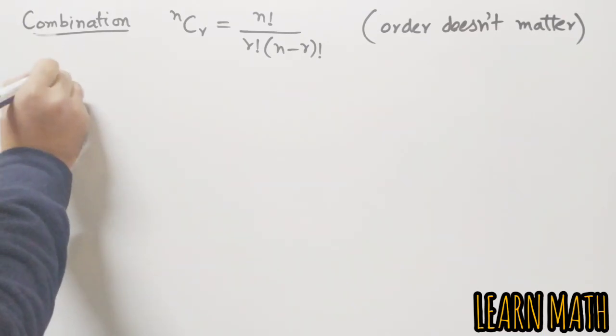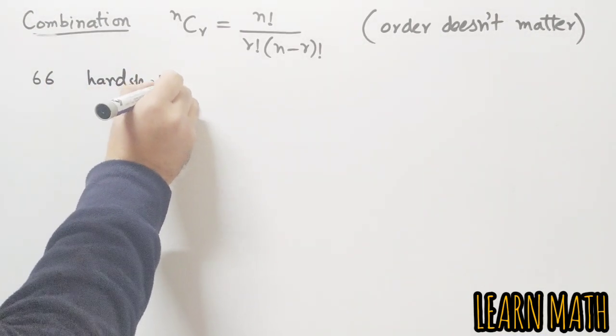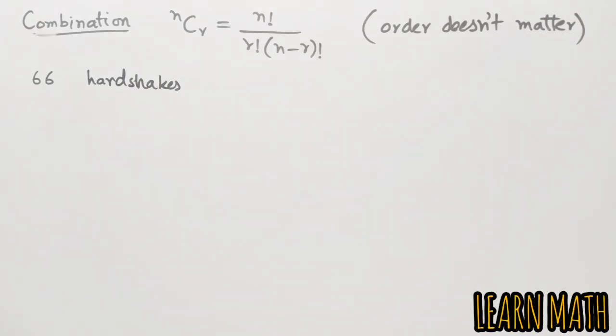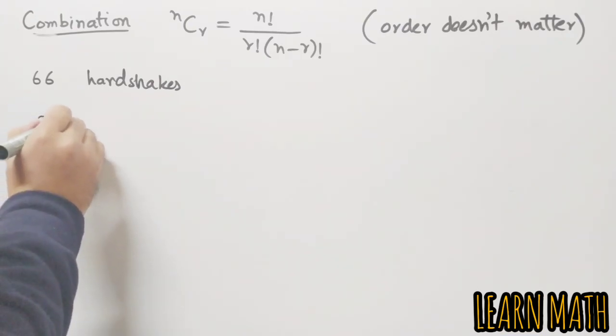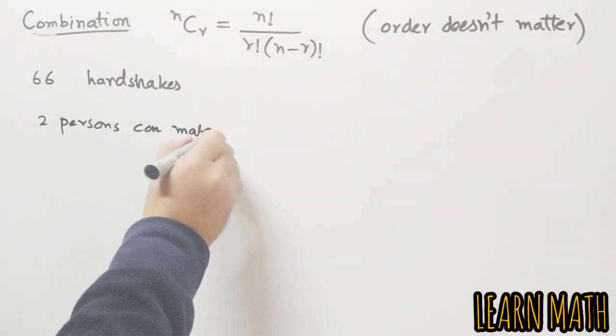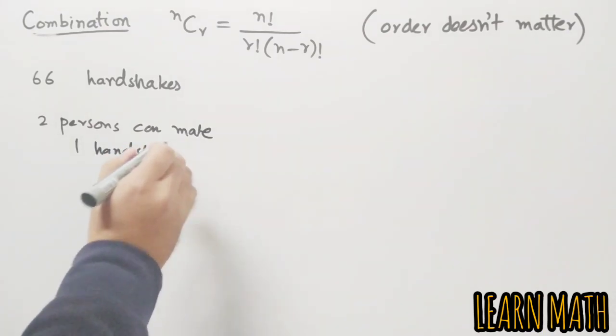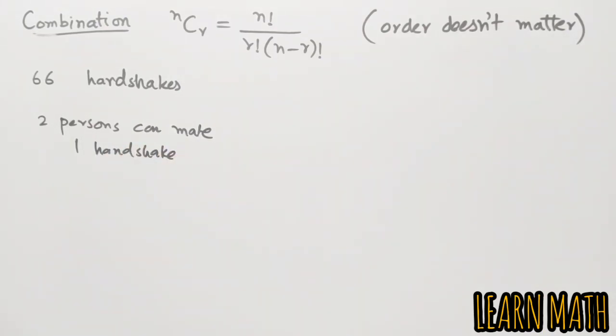Now we are going to solve the main problem. 66 is the number of handshakes given in the question. Two persons can make one handshake, so r is two, and number of persons we don't know. We have to find number of persons.